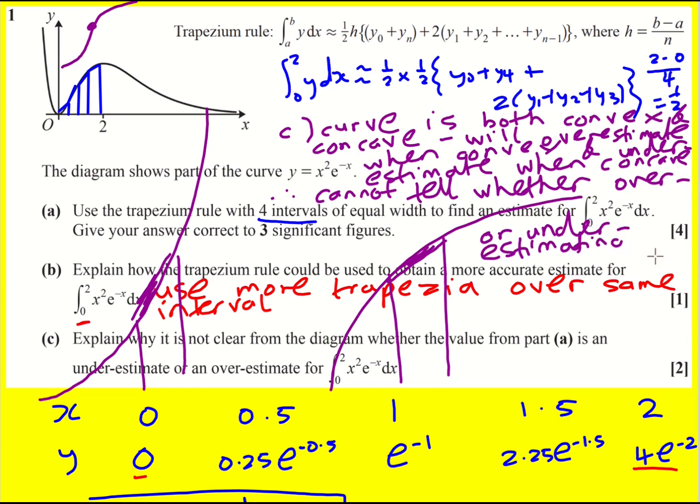Make sure you say enough here because there are two marks. Reference to concave or convex is ideal — you could say point of inflection. But convex and concave are good to talk about because then you can explain what they actually do: concave underestimates and convex overestimates.